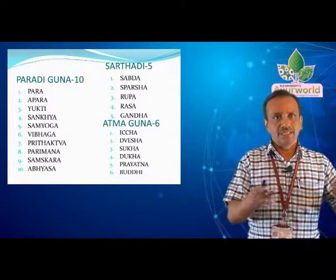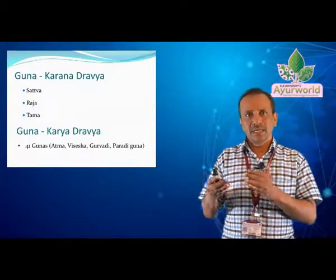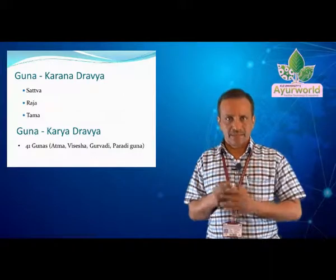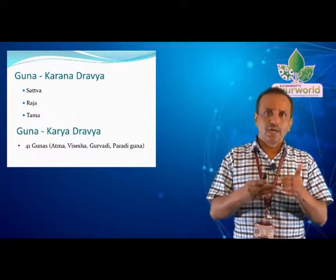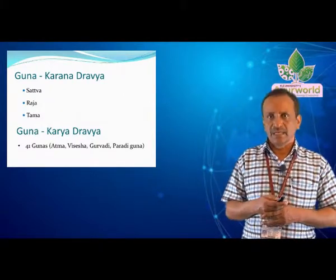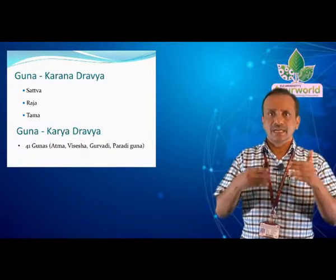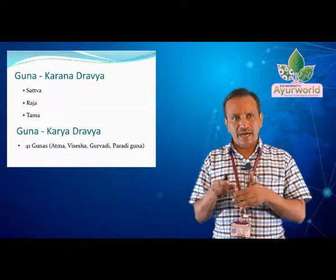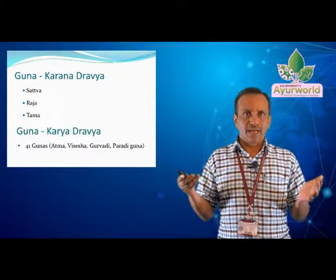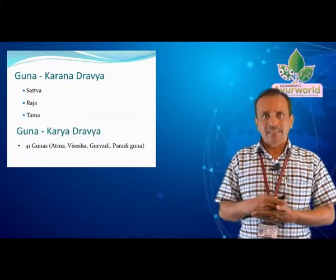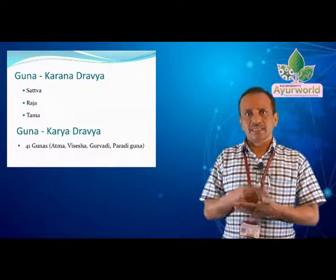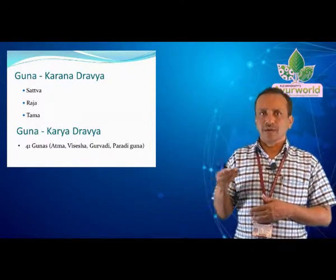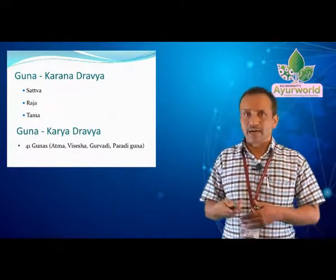We can also classify these Gunas in a different way, where we can see that Gunas are Sattva, Rajas, and Tamas — called the Gunas of Karanaramyas, from the initial stage of the evolution of this universe. But for us in treatment, in Chikitsa Shastra, we use the Karidravyas and Gunas of Karidravyas.